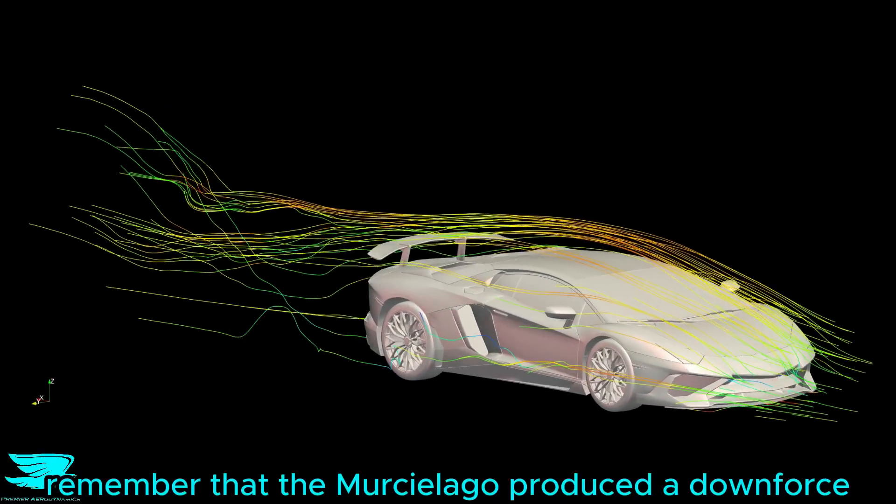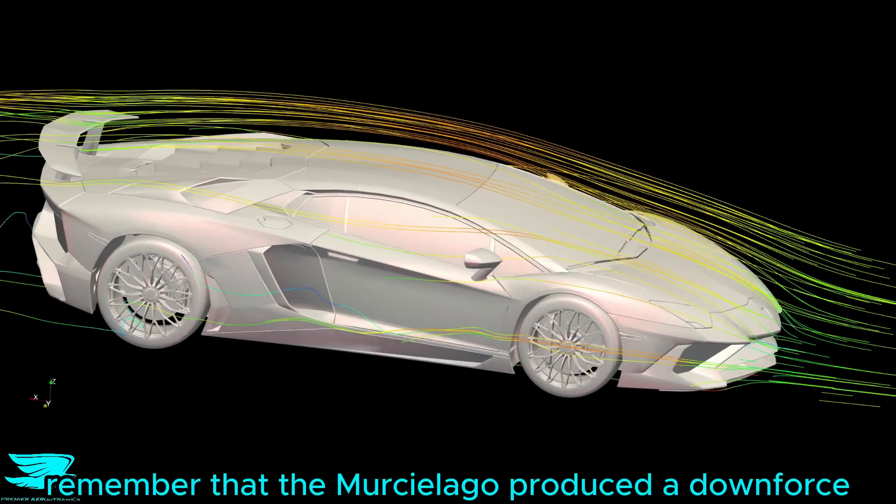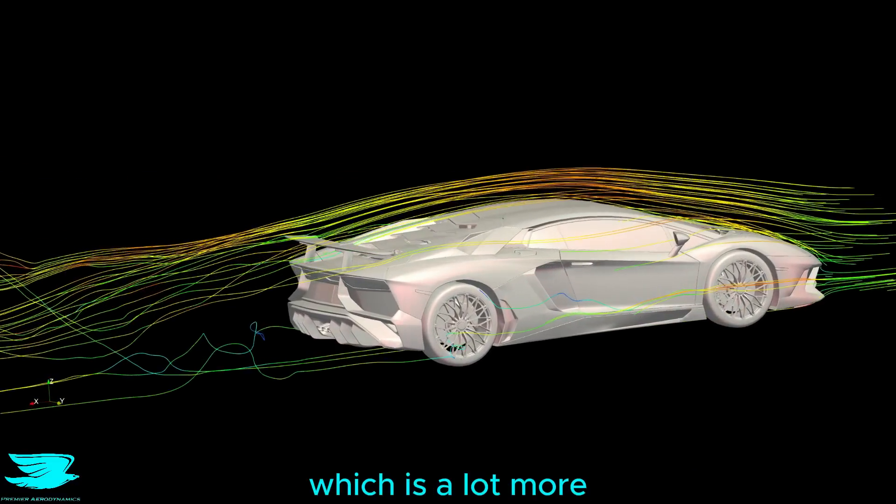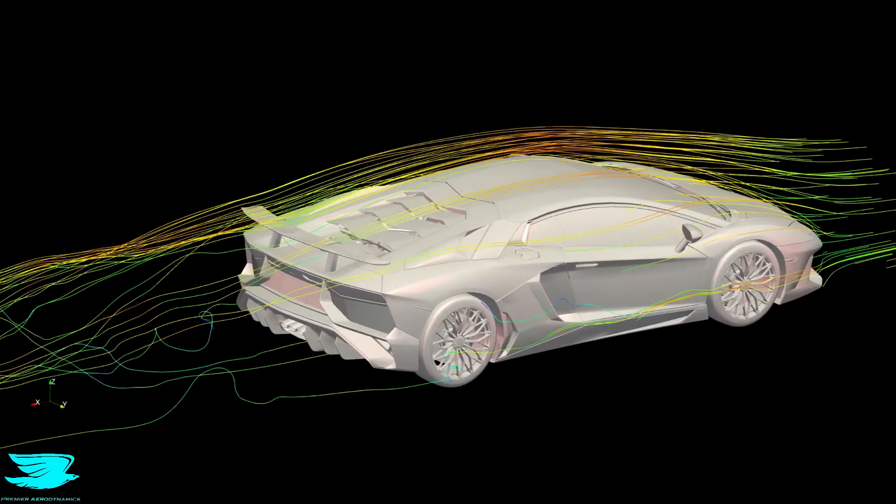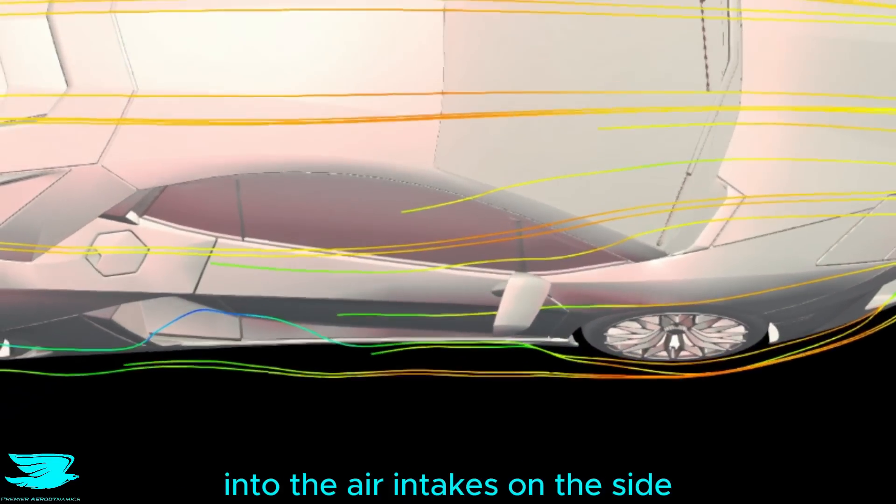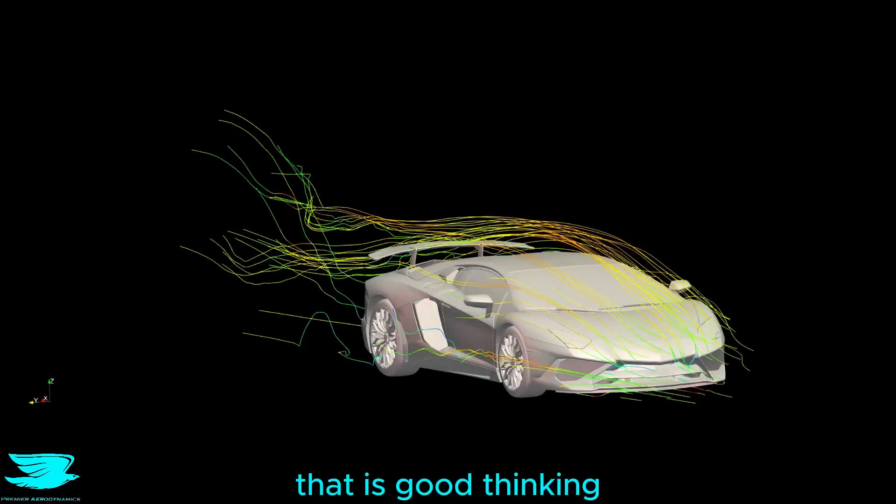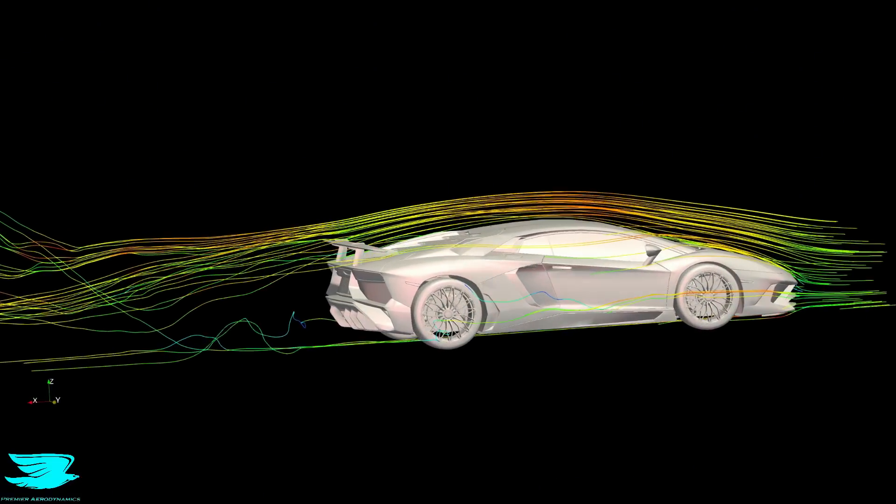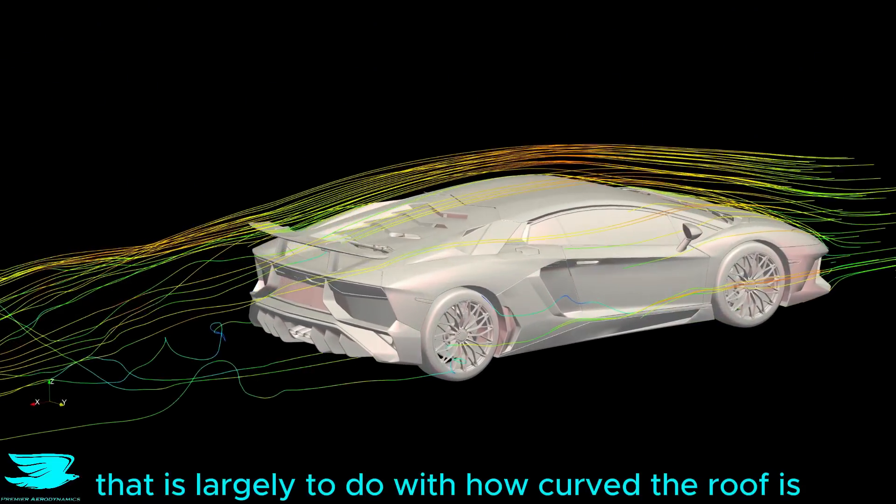Now, remember that the Murciélago produced a downforce coefficient of 0.1? Well, the Aventador produces 0.18, which is a lot more. For the Aventador, Lamborghini did their trick again of directing the flow around the front wheels into the air intakes on the side. That is good thinking. And you can see just how well the flow over the roof dives down to reduce the wake size. That is largely to do with how curved the roof is.